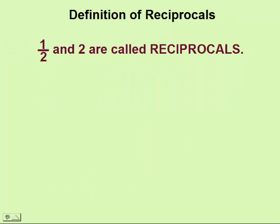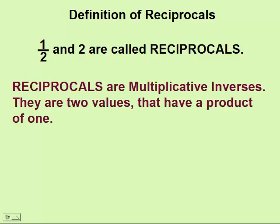One-half and two are called reciprocals of each other. Reciprocals are called multiplicative inverses. In other words, they are two values that multiply together to have a product of one. One-half times two would equal one.